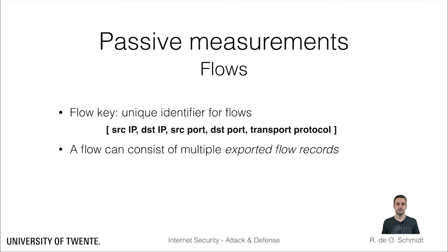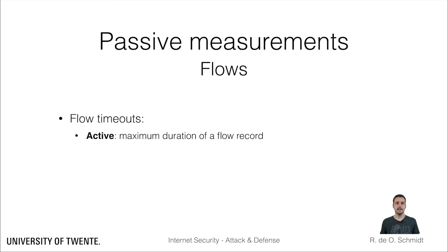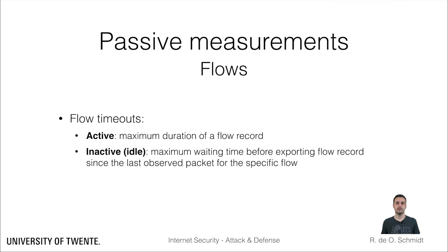At the measurement process, flows are measured in terms of flow records. A flow can consist of multiple exported flow records, and these flow records are defined by two timeouts. The active timeout defines the maximum measurement duration of a flow — once it expires, a flow record is exported and the measurement counters are reset. The inactive or idle timeout defines how long the measurement process should wait since the last observed packet for a given flow before considering that the flow has finished and exporting the flow record.